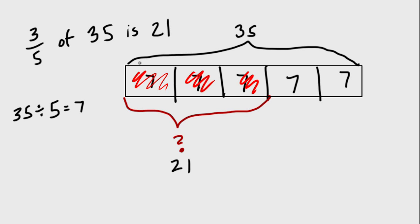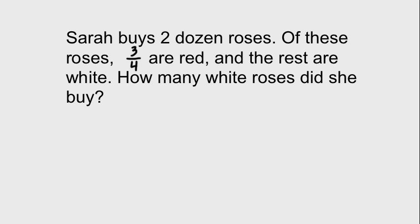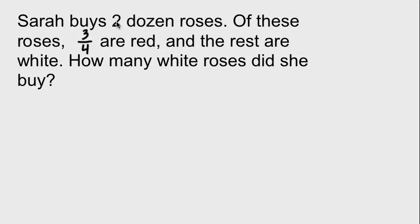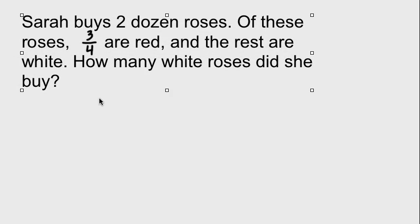That's how we do that. Now if I asked you what four-fifths would be, you would just add that next seven, so it'd be 28. Now, how would we apply this understanding to a word problem? Sarah buys two dozen roses. Of these roses, three-fourths are red and the rest are white. How many white roses did she buy?